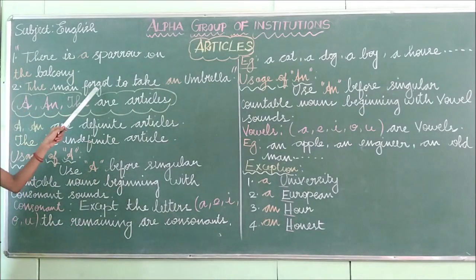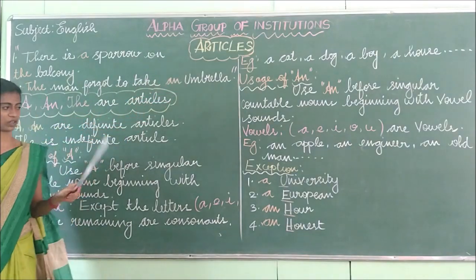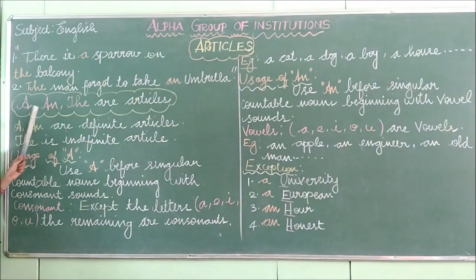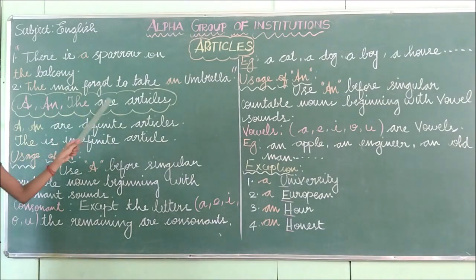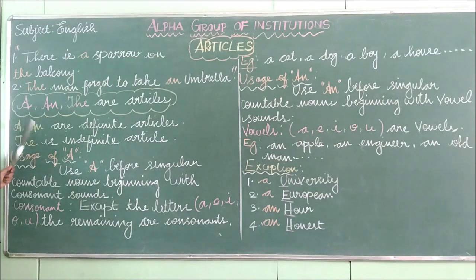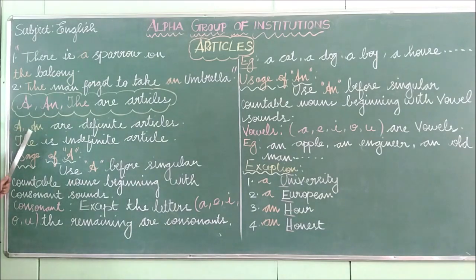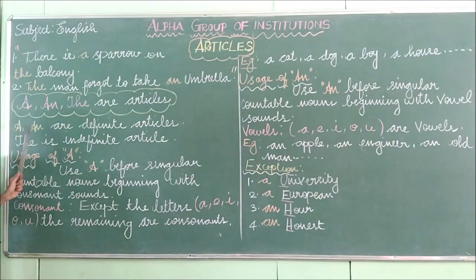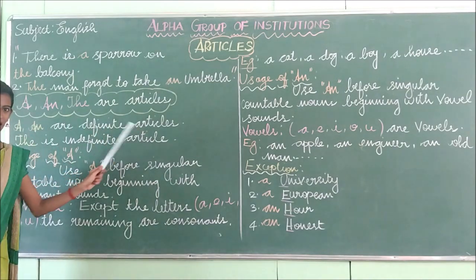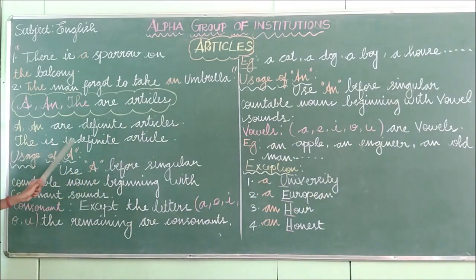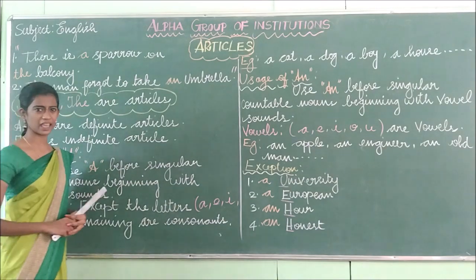Those words are called articles. So look here: 'a', 'an', and 'the' are articles. Repeat after me: 'a', 'an', and 'the' are articles. So 'a' and 'an' are indefinite articles, and 'the' is the definite article.